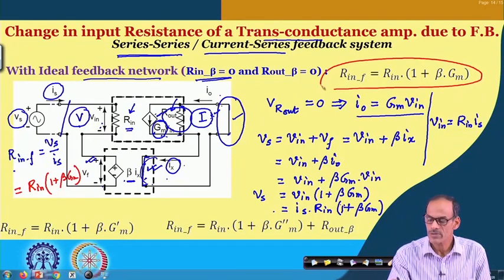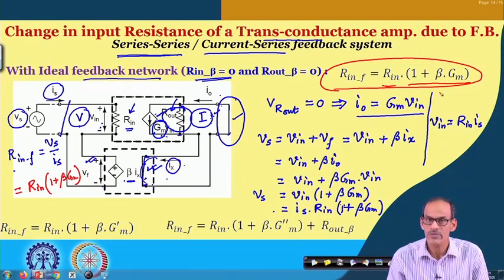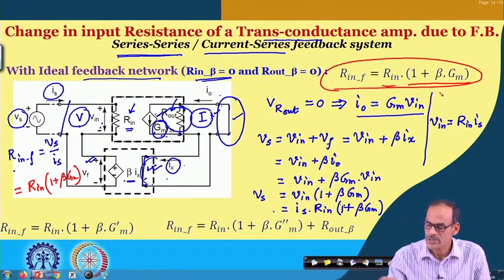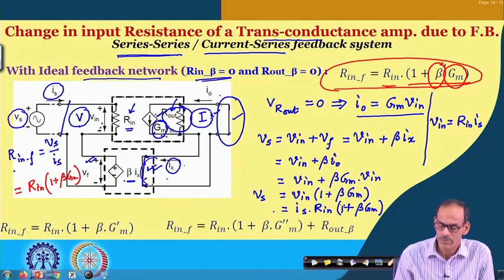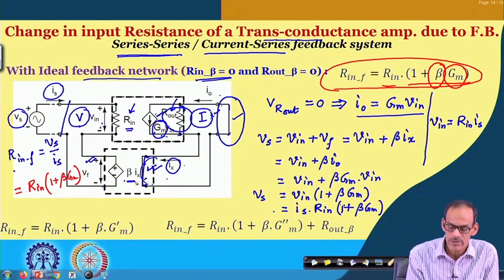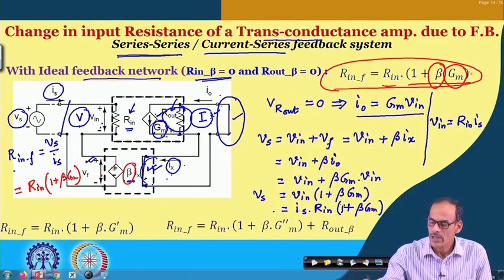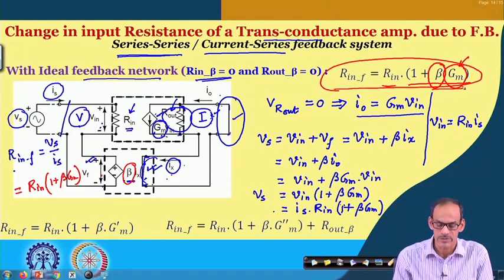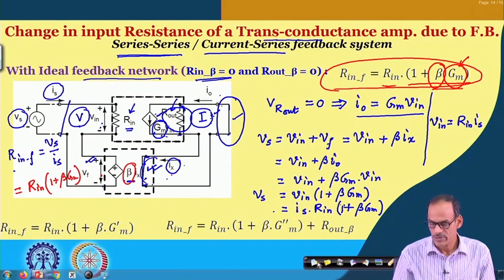Note the difference: instead of A_v we have g_m here. Also, beta here converts current to voltage, so its unit is ohms, while g_m has unit of siemens (mhos), making their product dimensionless. So that is how the input resistance is increased by this feedback mechanism.